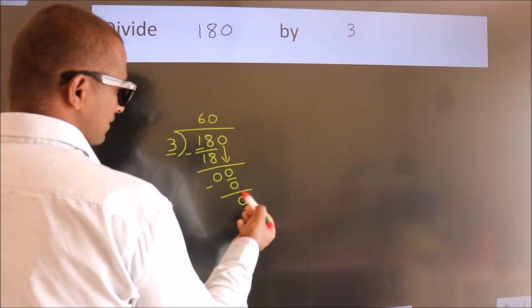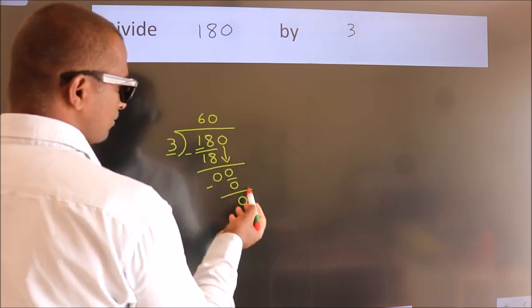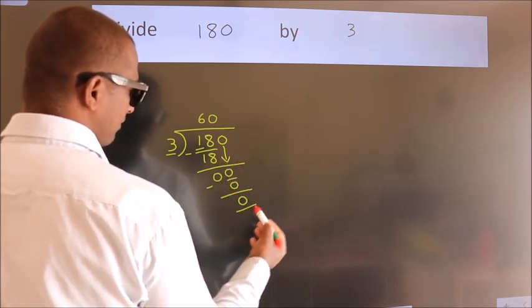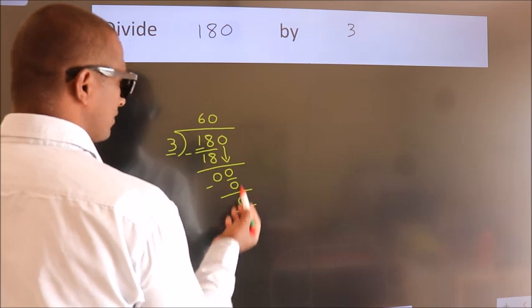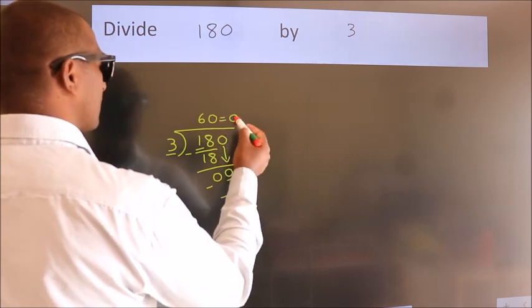After this, no more numbers to bring down and we got remainder 0. So this is our quotient.